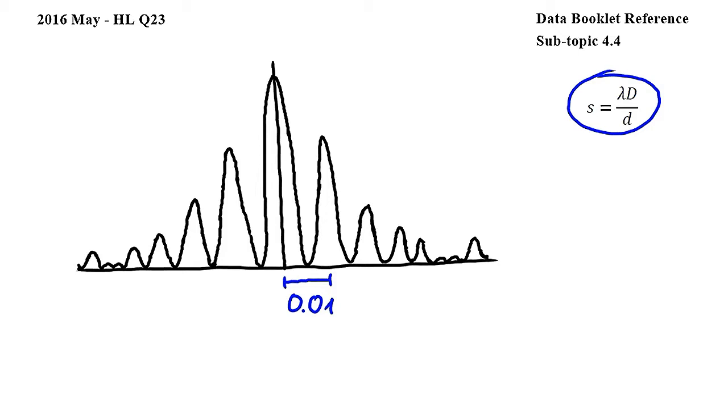As I wrote down on the sketch below, the diffraction angle between maxima is 0.01 radians. Since this value is given in radians, it is approximately equal to the distance between the maxima, in other words the fringe spacing.